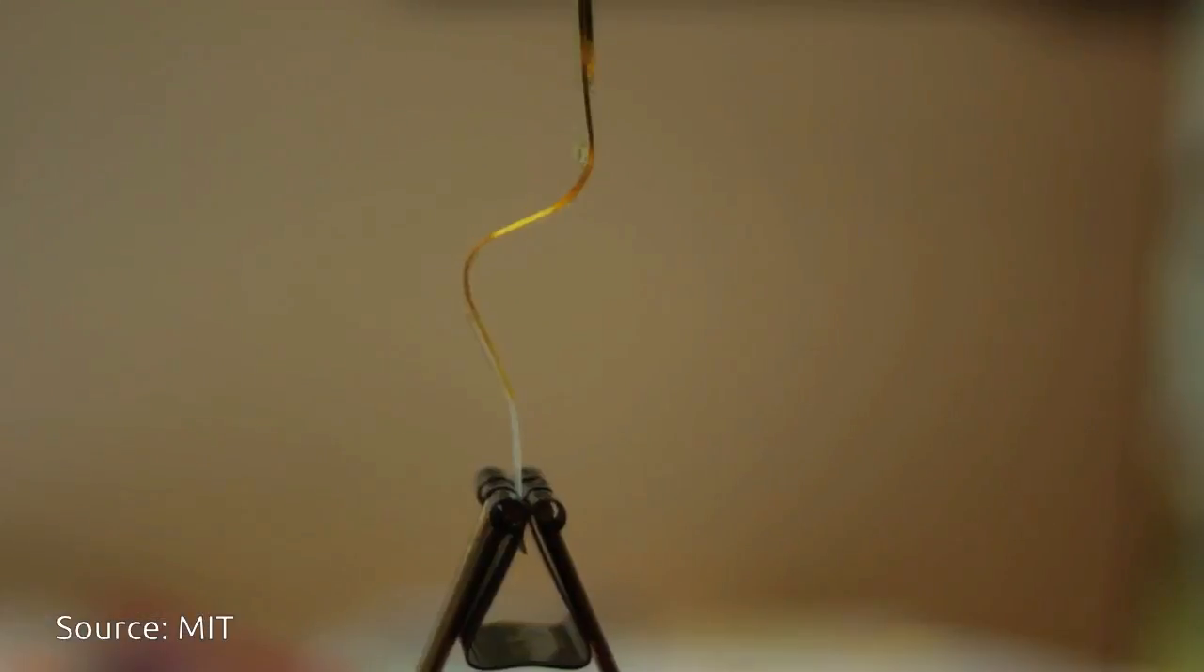To illustrate this idea, the researchers built a prototype self-folding printable device that includes electrical leads and a polymer pixel that changes from transparent to opaque when a voltage is applied to it.